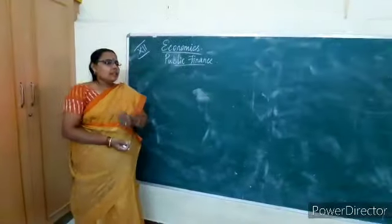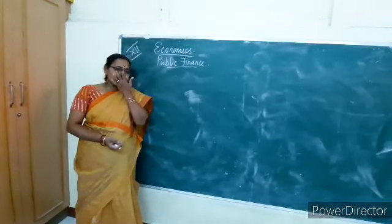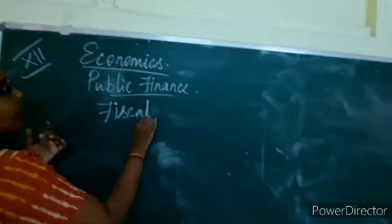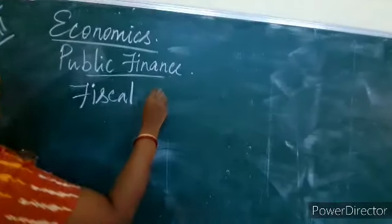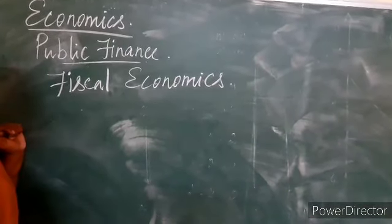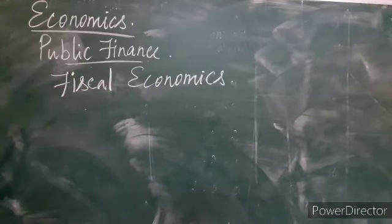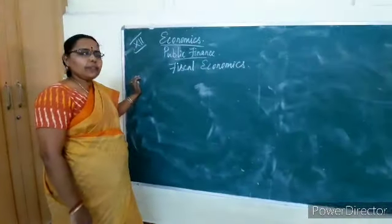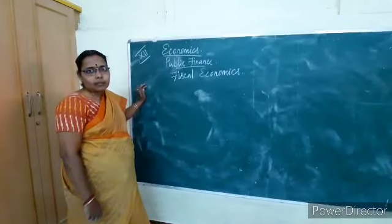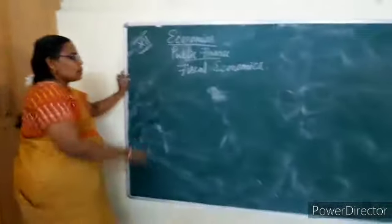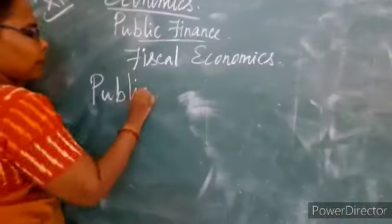Namaskaram girls. In the previous class, I started a new lesson — fiscal economics, also called public finance. The word fiscal is derived from the Greek word meaning basket. We have five subdivisions: public expenditure, public revenue, public debt, financial administration, and fiscal policies. We already learned what public expenditure is, its characters, and causes for its increase. Today, we are going to learn public revenue.